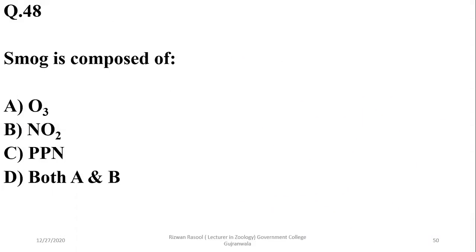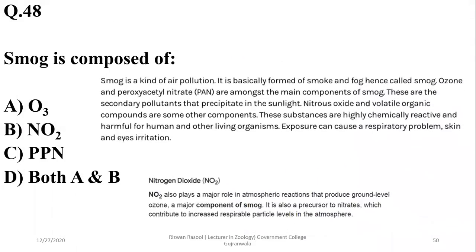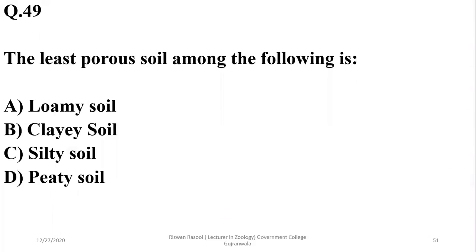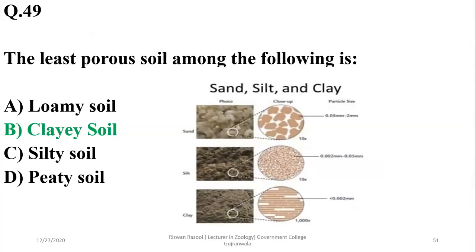Question 47: Smog is composed mainly of ozone and PAN (peroxyacetyl nitrate), but nitrogen dioxide is also a component. Delta is the right option. Question 48: The least porous soil is clay soil. Beta is the right option.